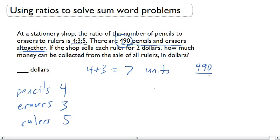And we know that the total amount of pencils and erasers was 490. If I do a simple division, 490 over 7, that's going to give me 70. So, now I know that each unit had to be 70.